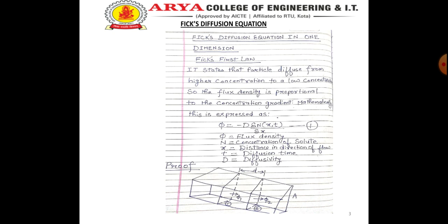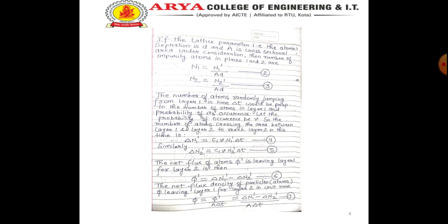As a proof of Fick's First Law, let us consider a one-dimensional single crystal where two adjacent layers have N1' and N2' impurity atoms respectively. If the lattice parameter, that is the atomic separation, is d and A is the cross-sectional area under consideration, then the number of impurity atoms in layers 1 and 2 are N1 = N1' / (Ad) and N2 similarly from equation 3. The number of atoms randomly jumping from layer 1 in time is proportional to the number of atoms in layer 1 and the probability of occurrence. Let the probability of occurrence be V. So the number of atoms crossing the area between layer 1 and layer 2 in this time is ΔN1' = C1·V·N1'·ΔT (equation 4). Similarly, we get equation 5: ΔN2'. The net flux of atoms φ' leaving layer 1 for layer 2 is then given as the difference between these two.